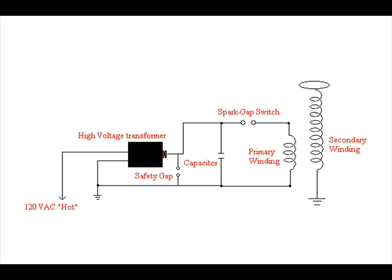Let's take a closer look at the Tesla coil. There are different designs, but Tesla coils consist of six basic parts: the high voltage transformer, generally of at least 6,000 volts; a capacitor; a spark gap switch; a primary winding; a secondary winding; and a safety gap. The safety gap is to protect the transformer from high frequency kickback and voltage spikes.